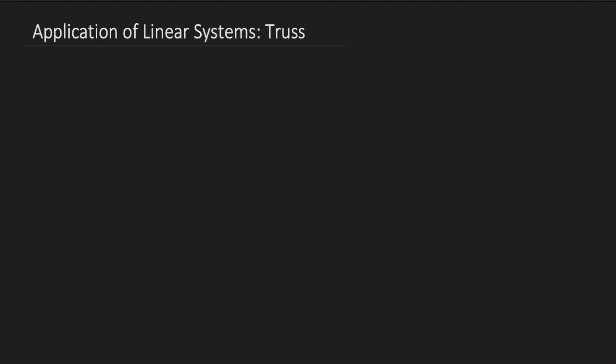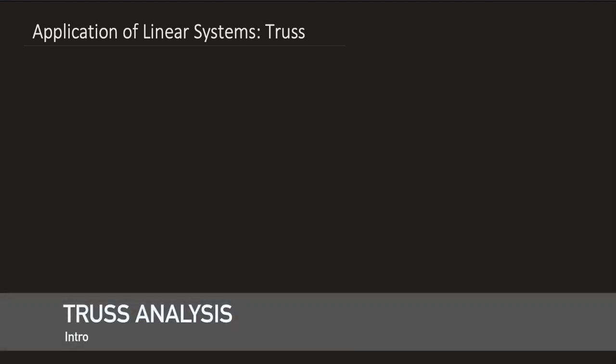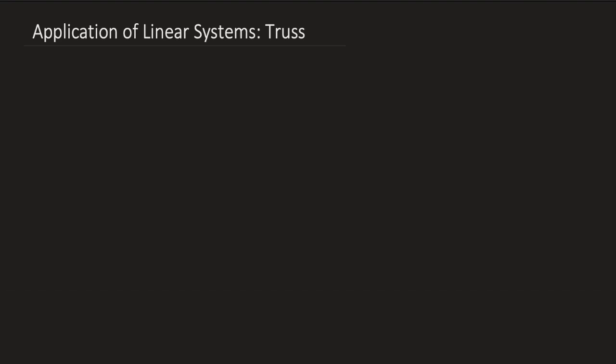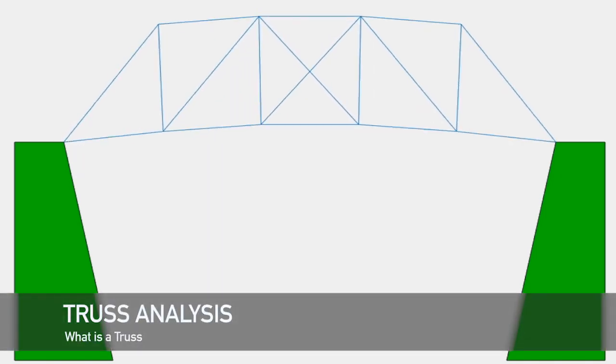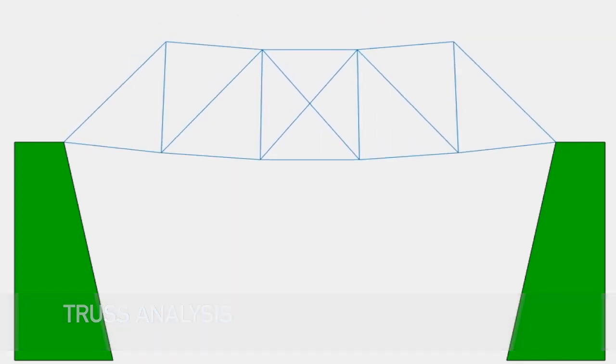We can't just introduce linear systems without at least giving an application or two. In this lecture, we're going to dedicate one application to trusses. Now, a truss is a structure normally containing triangular units, as you can see in this figure.